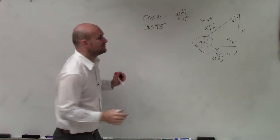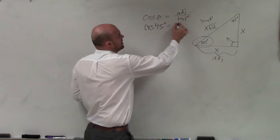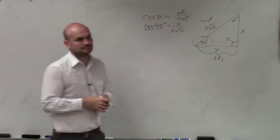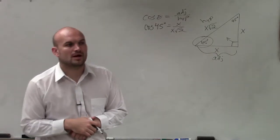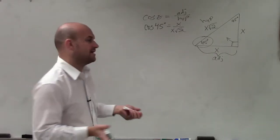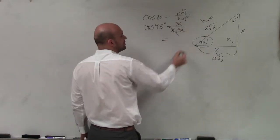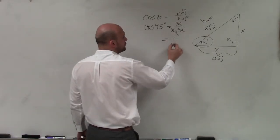So therefore, cosine of 45 degrees equals x over x square root of 2. Now we're going to simplify that. That equals, I can delete those, divide those out, so it's 1 over the square root of 2.